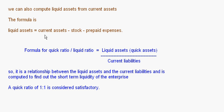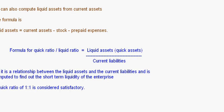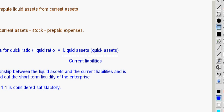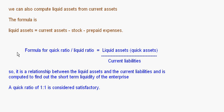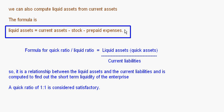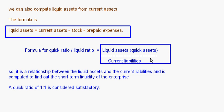The formula for calculating liquid assets is: Current Assets minus Stock minus Prepaid Expenses. The formula for the quick ratio, or liquid ratio, or acid test ratio is: Liquid Assets divided by Current Liabilities. It represents the relationship between liquid assets and current liabilities and is used to find out the short term liquidity of the enterprise.